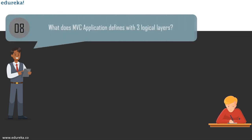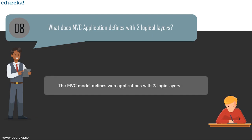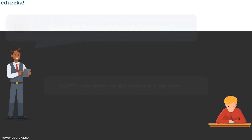The next question is: what does the MVC pattern define with three logical layers? The MVC model defines web applications with three different layers: the business layer (model logic), the display layer (view logic), and the input control (controller logic). The model handles logic for application data and retrieves data from a database. The view takes care of the display of the data — most often views are created from model data. The controller handles the user interaction.